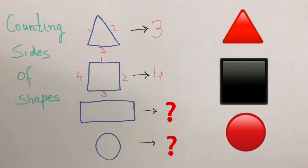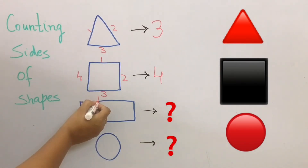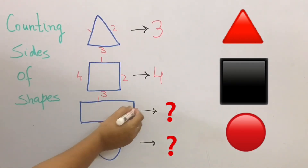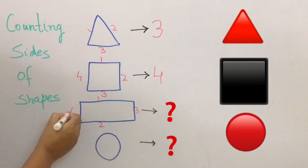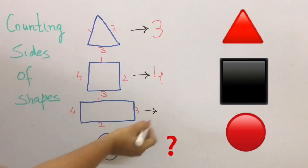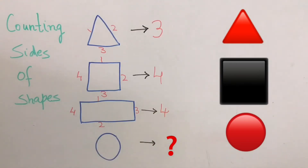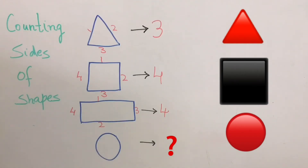Next we have a rectangle. Rectangle has how many sides? One big side, two big side, three — it's a short side, and four — short side. So we have again four sides. Now circle — does it have any side? No! So that means circle has zero sides.